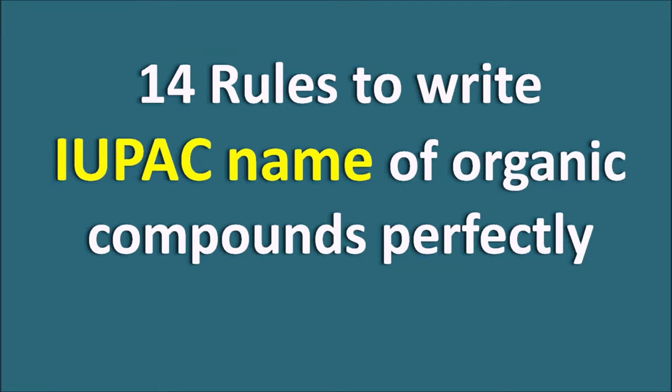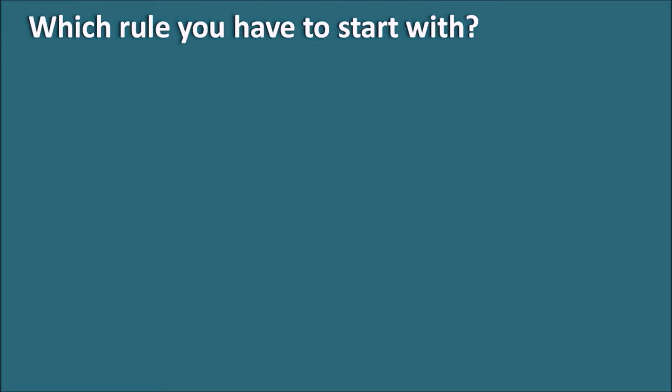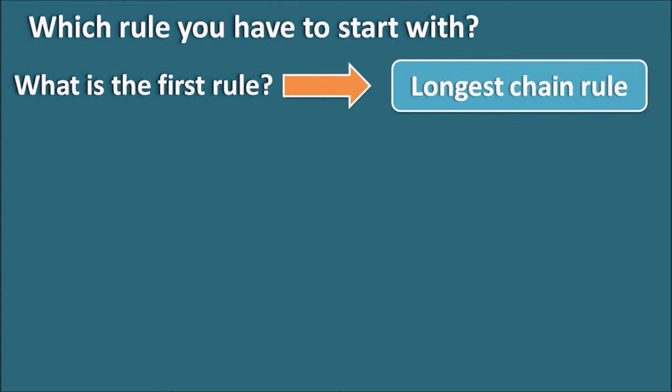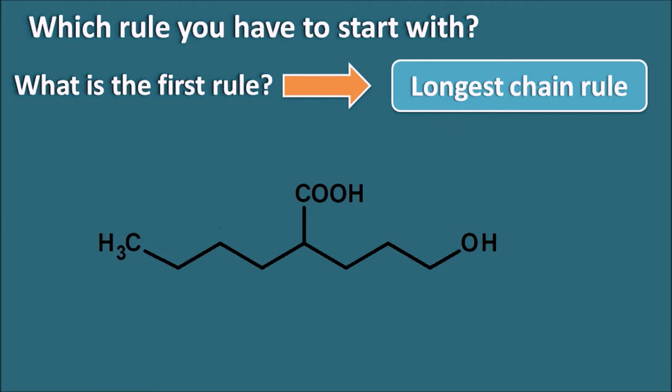14 rules to write IUPAC names of organic compounds perfectly. Which rule do you have to start with? What is the first rule we have to follow in order to write the IUPAC name of organic compounds? Many times we think it is the longest chain rule. But let us consider one example.